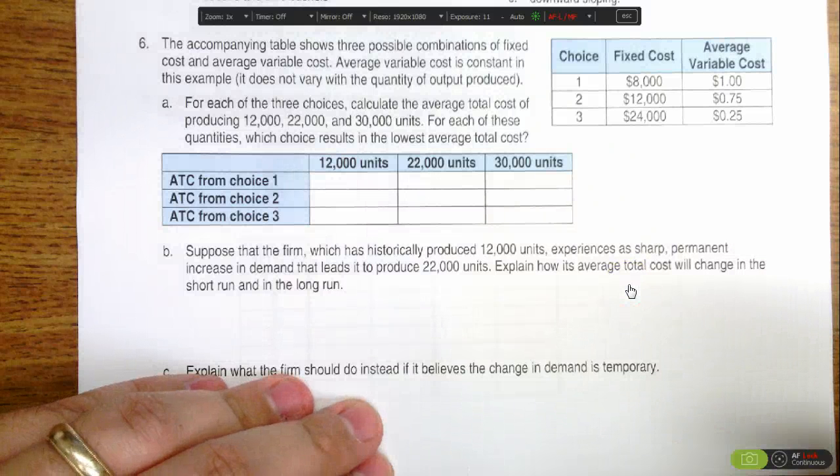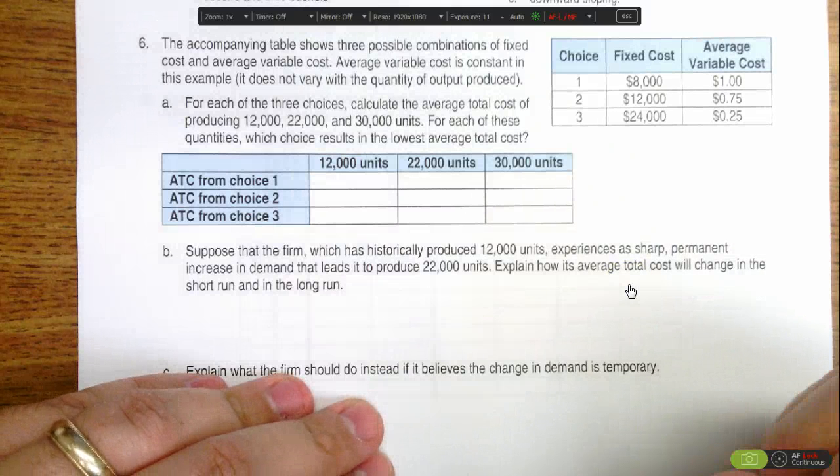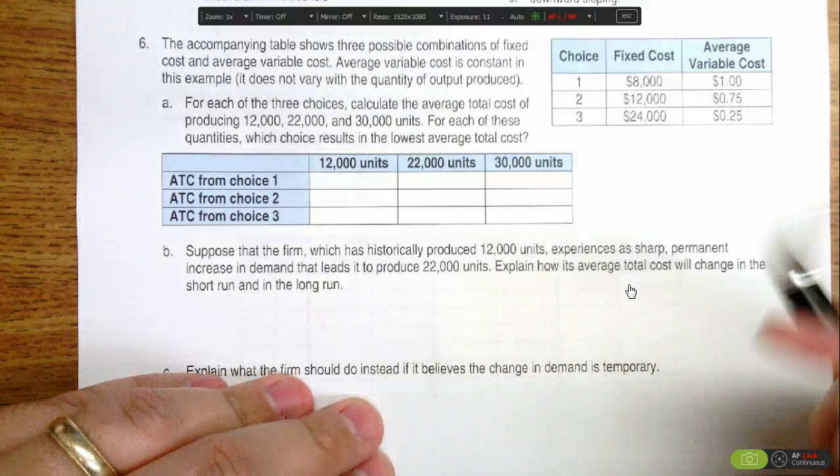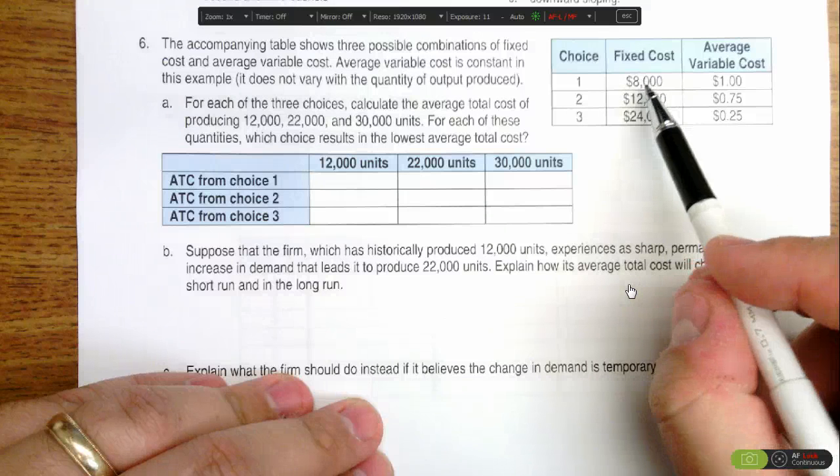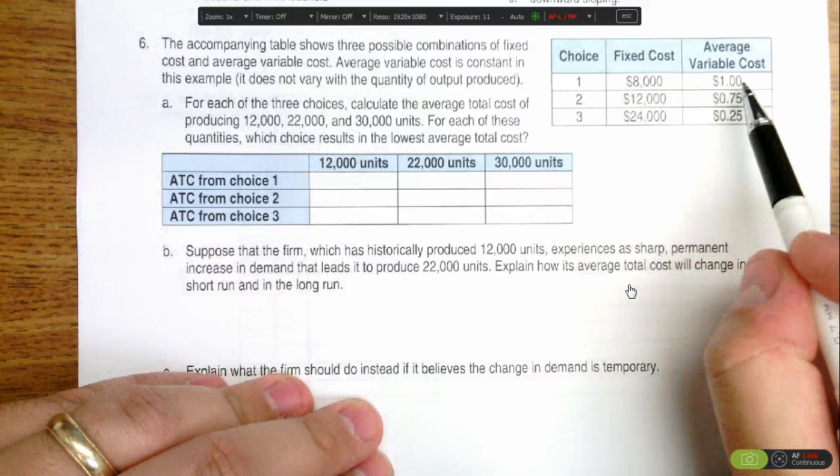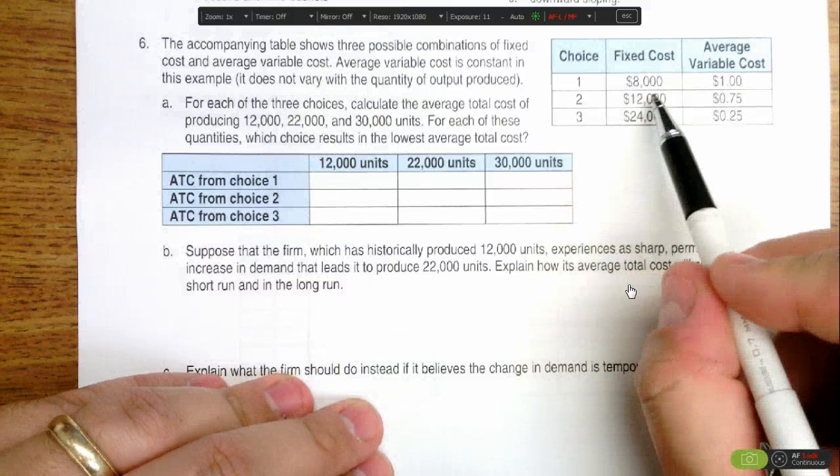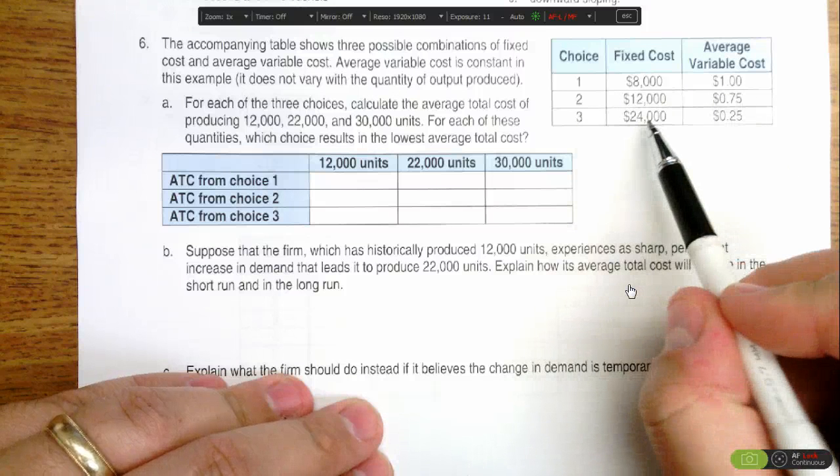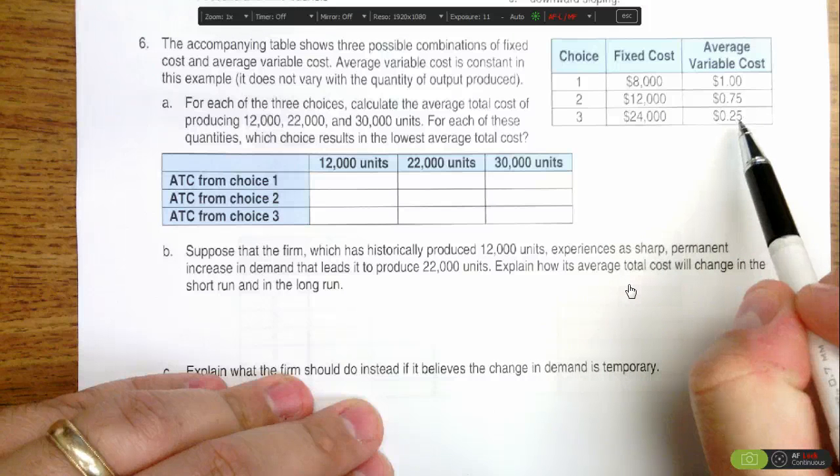This portion of the question is asking us to determine what the average total cost is for each of three production options. Choice one has $8,000 in fixed costs with a dollar variable cost on average. Choice two has higher fixed costs but lower variable costs. Choice three has even higher fixed costs but significantly lower average variable costs.